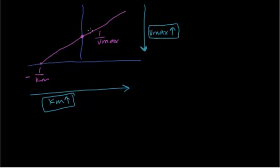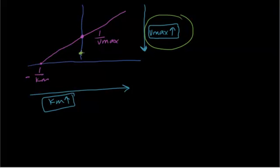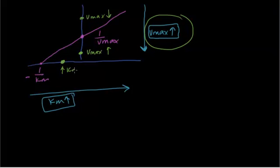Keep these two ideas in mind: Vmax increases when you go from up to down — meaning the Vmax is maximum at the lower part of the curve and smaller at the upper part. And KM increases when you go from left to right, so KM is larger on the right and smaller on the left. This is really important.